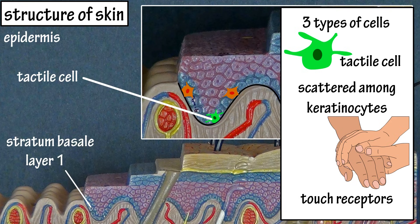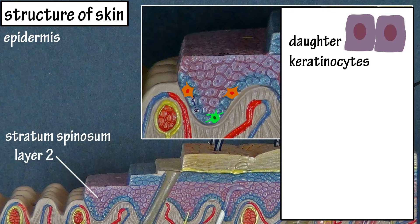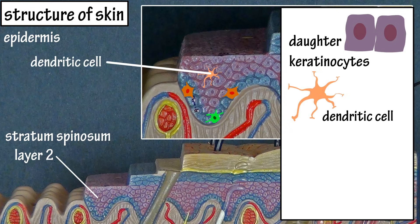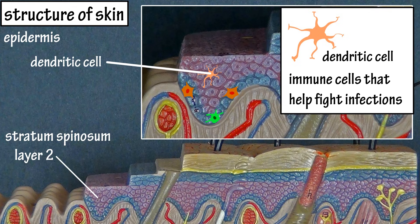The next layer, moving upwards in the epidermis, is the stratum spinosum. This layer is made up of daughter keratinocytes made from dividing cells in the stratum basale layer below, and epidermal dendritic cells. The daughter keratinocytes connect to neighboring cells via desmosomes, which are one of the ways cells connect to one another, giving them a prickly appearance. The dendritic cells are immune cells that help fight infections in the skin.